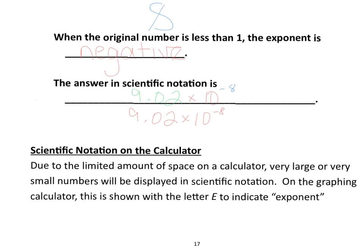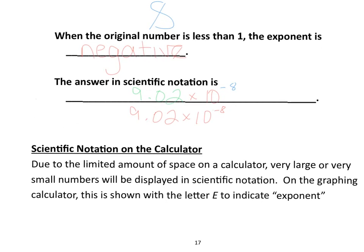At the bottom is something to note about the calculator: due to limited display space, when you get a number that's really large or very small, it's going to be displayed in scientific notation automatically. The calculator indicates this using the letter E, which stands for exponent. When you see this, it'll show a number, then the E, then another number — that first number is your 9.02 or your 2.1, E indicates times 10, and the number after it is your exponent. Graphing calculators will automatically do this for numbers that are super large or super small.